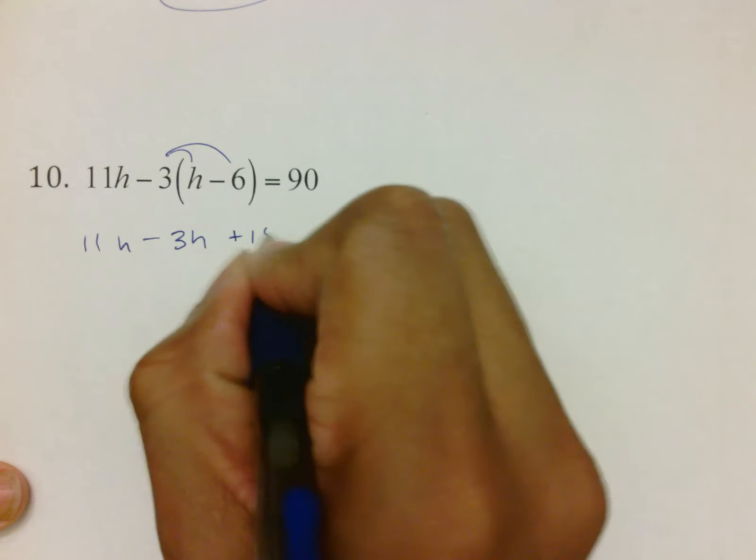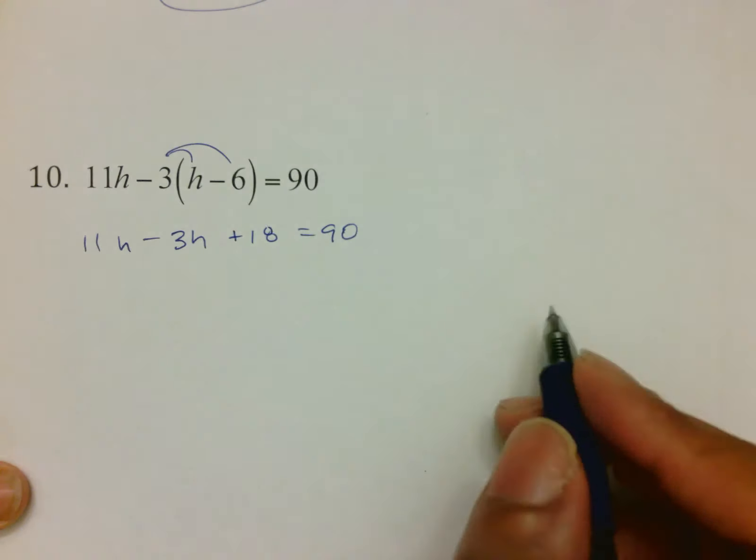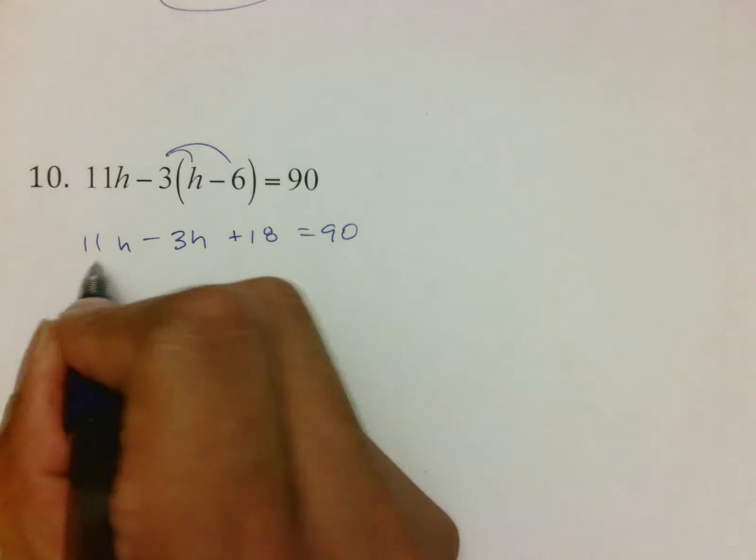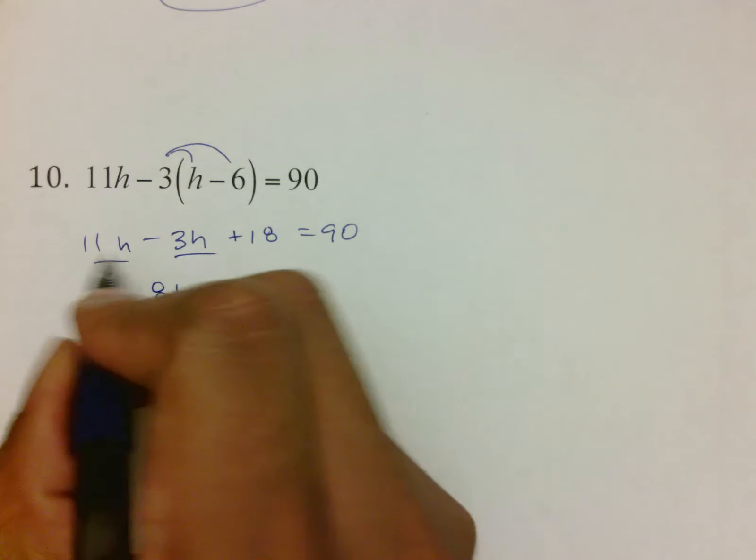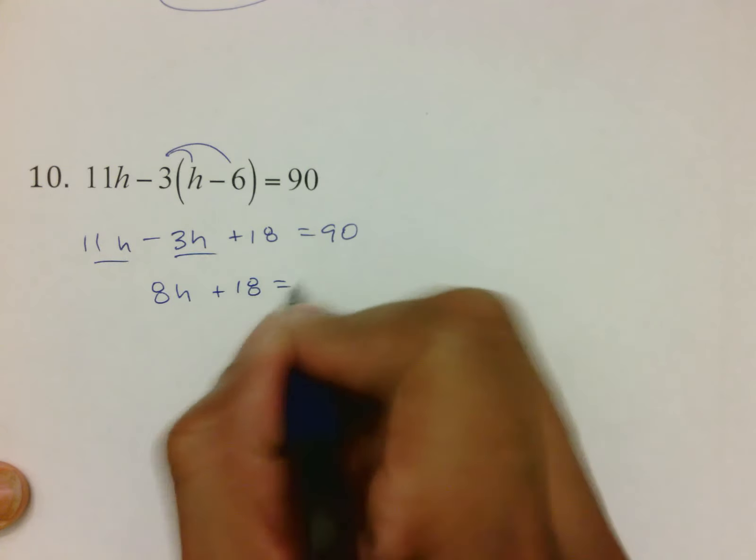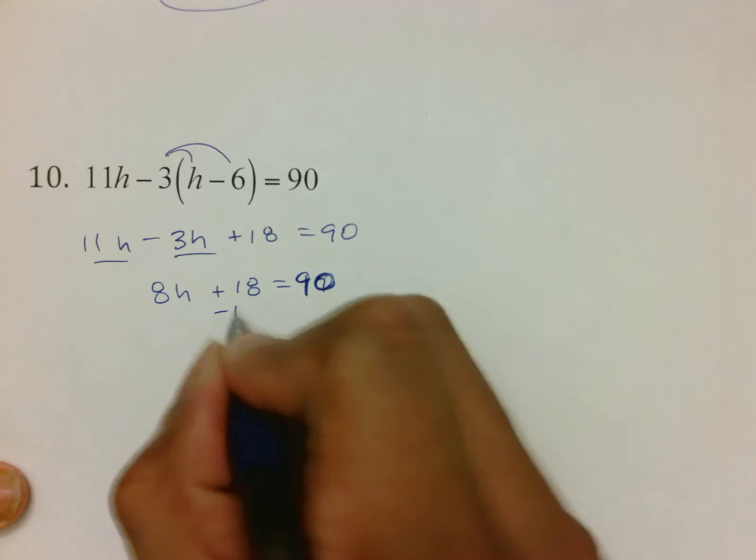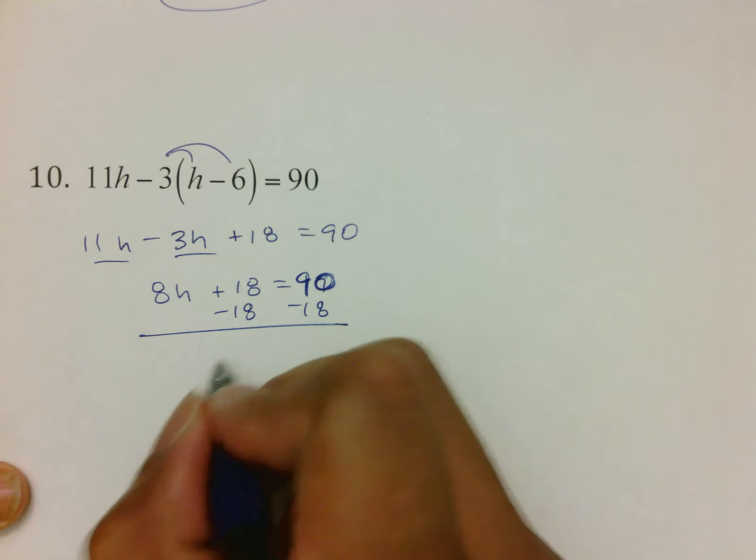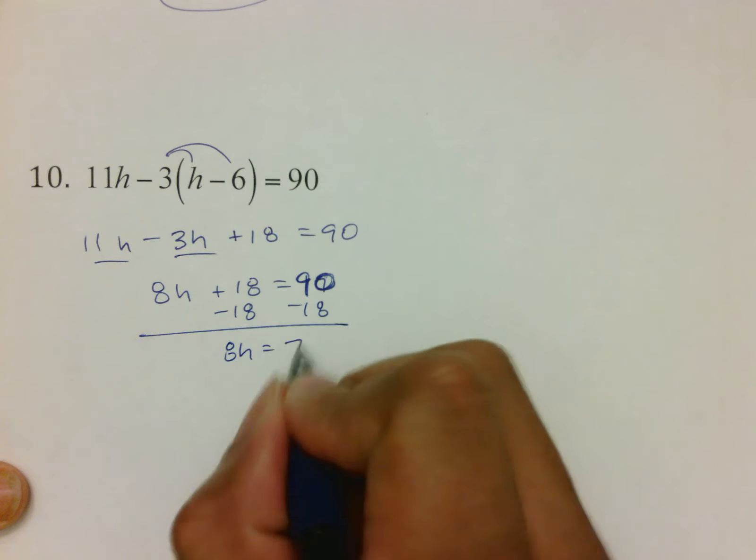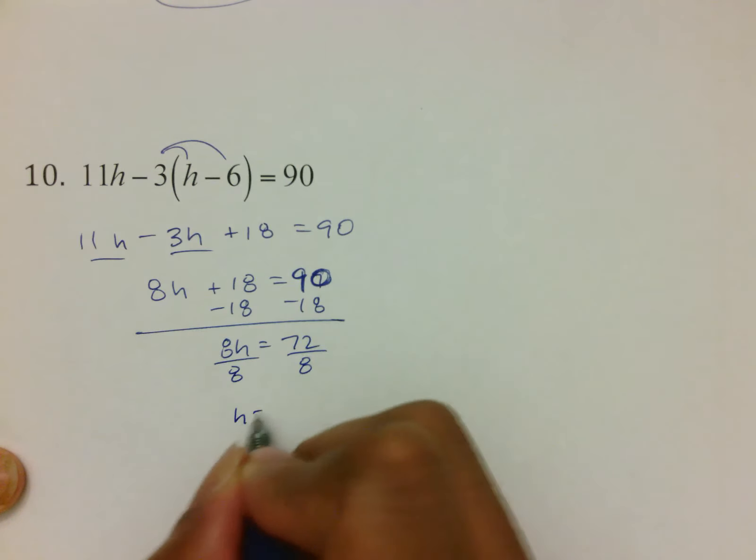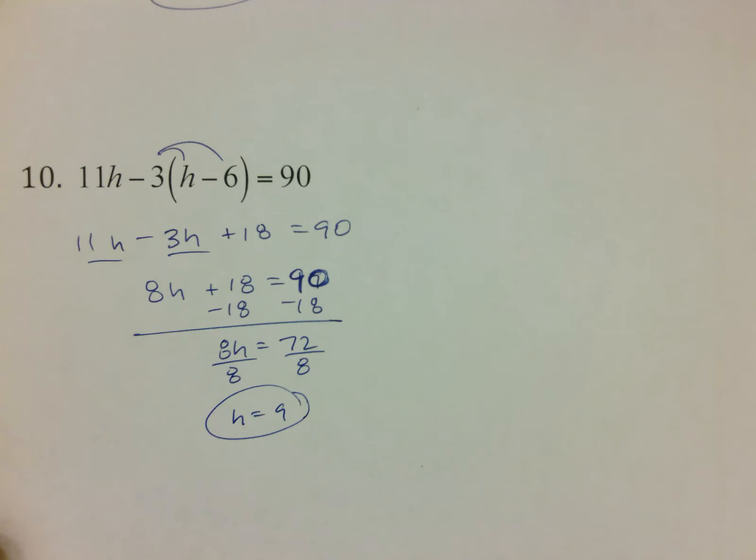Negative 3 and negative 6, if you remember, make a positive 18. Set all that up equal to 90. The 11H comes down, distribute your negative 3. Now you put 11H with negative 3H to make 8H because 11 minus 3 is 8. From there, we're home. We subtract 18, getting 8H equals 72. We divide by 8 to get H is equal to 9 again.